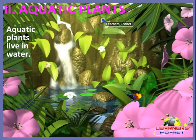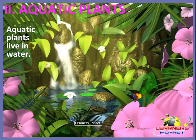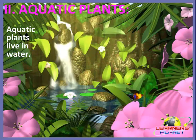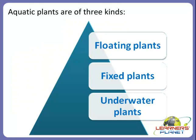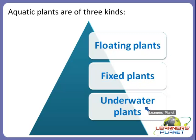The plants that live in water are called aquatic plants. Aquatic plants are of three kinds: the first is floating plants, the second is fixed plants, and the third is underwater plants.